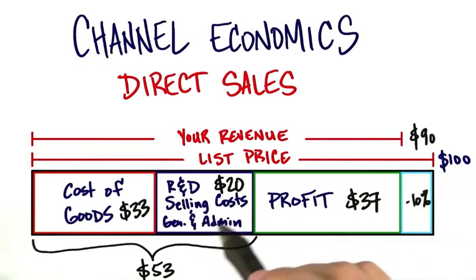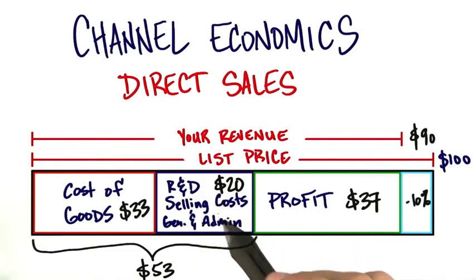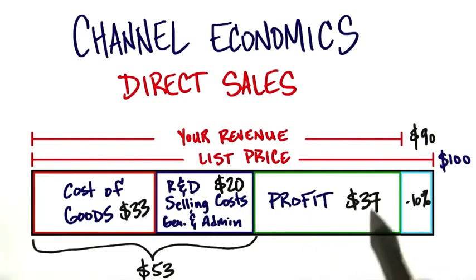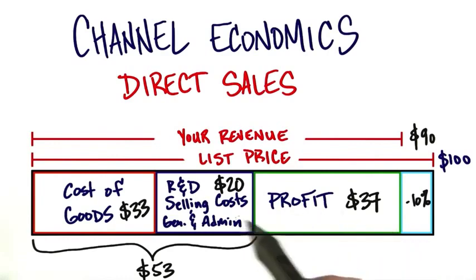So your selling costs were embedded here — this was the commission or direct sales cost or whatever you were paying your direct sales people — and you made $37 selling directly.